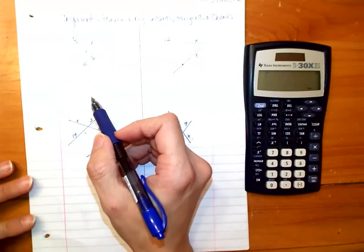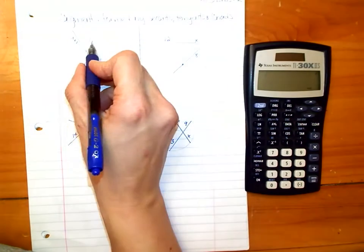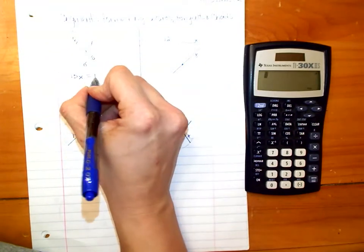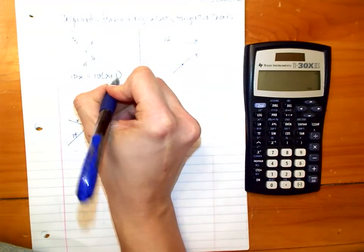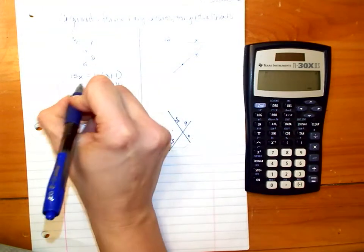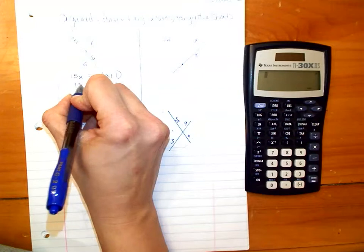So we have two chords intersecting inside a circle, which means that these two multiplied together, 15 times X, equal the other two multiplied together. And if we distribute, we get 10X plus 10 equals 15X.